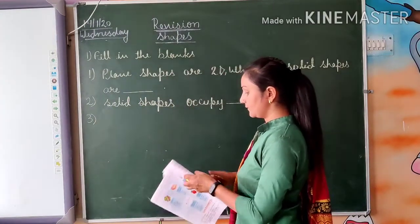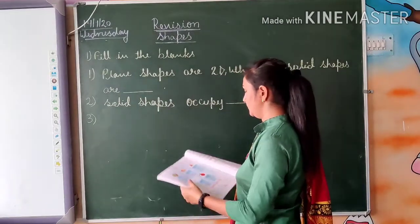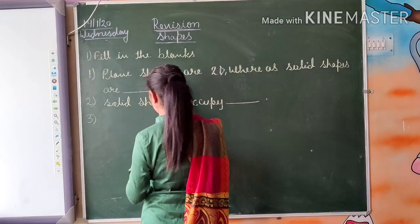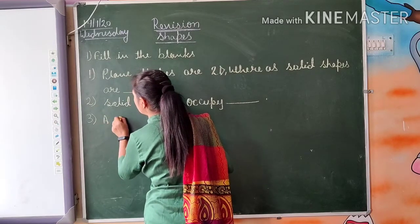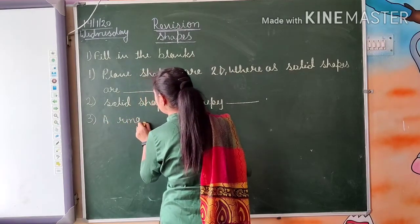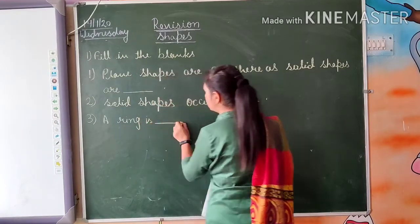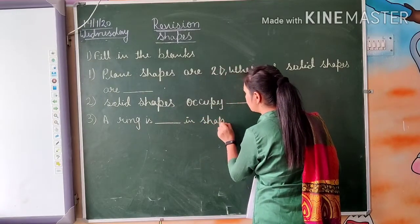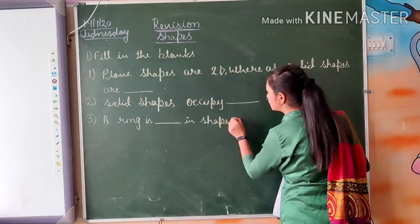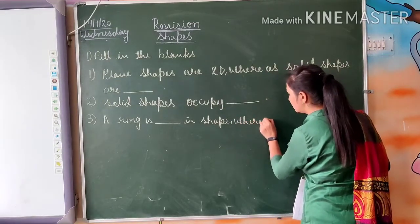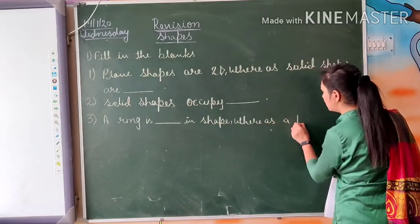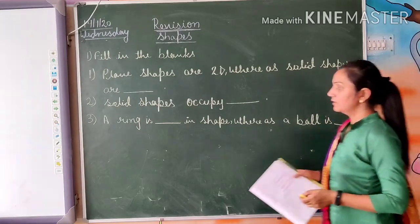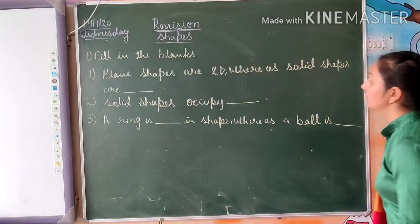Next blank is: a ray is dash in shape, whereas a ball is dash. You will complete it.